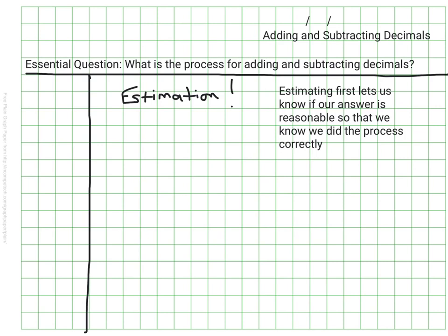Adding and subtracting decimals is a lot like adding and subtracting whole numbers. Anytime we add or subtract, we're always careful to line up the place values.